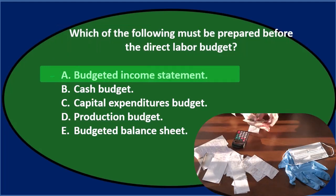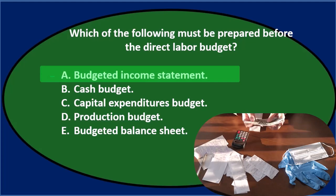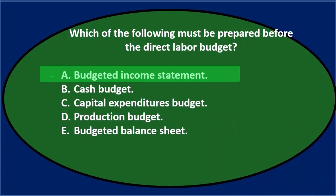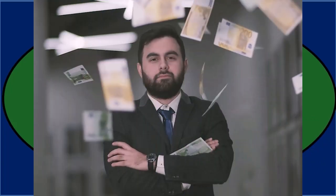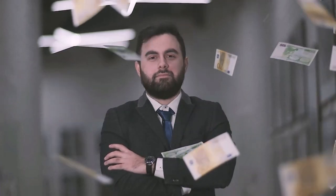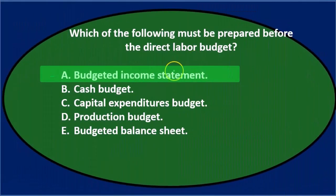When we see a question like this, we're thinking about the order of operations — the order of the budgets. We have to do all the budgets in a certain order to do them correctly. It starts with sales-type items first, and the end items are typically the financial statements, which include the income statements. The direct labor budget is somewhere in the middle, but the budgeted income statement is like the last thing we do, so it's probably not A.